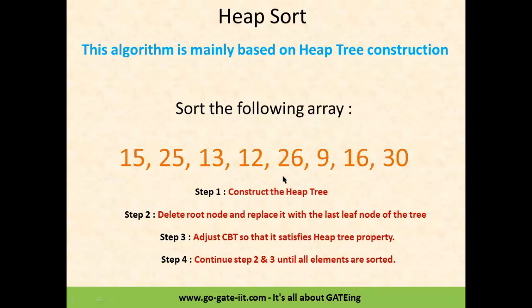There are certain steps which need to be followed in Heapsort. The very first step is we have to construct the HeapTree. HeapTree construction follows two properties: one is the ordering property, and another is CBT — Complete Binary Tree. Step 2: delete the root node and replace it with the last leaf node of the tree. We will delete the root node in every step with the last leaf of the tree constructed in step 1. Then step 3: adjust the CBT so that it satisfies the heap property — either max heap or min heap. Finally, we continue repeating steps 2 and 3. This is how the algorithm works.